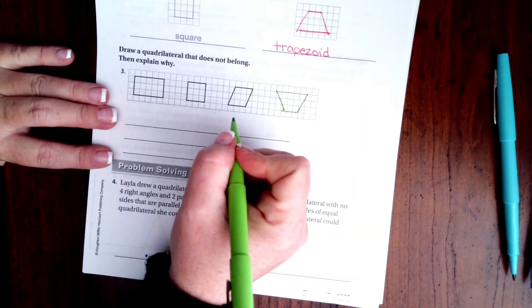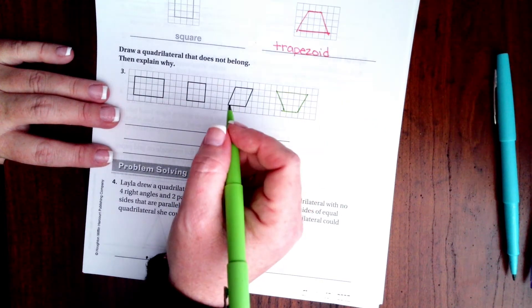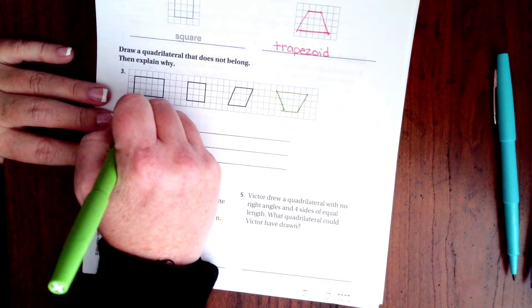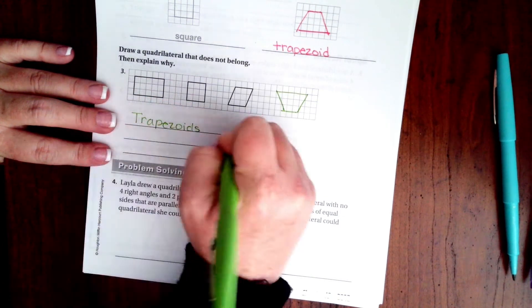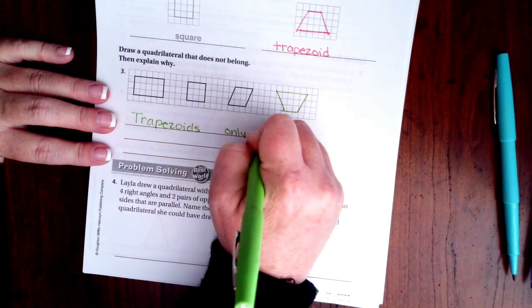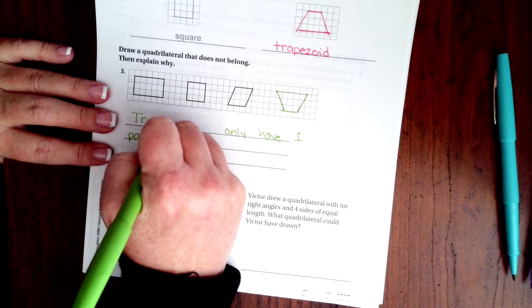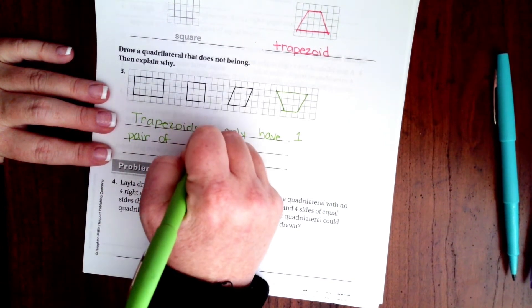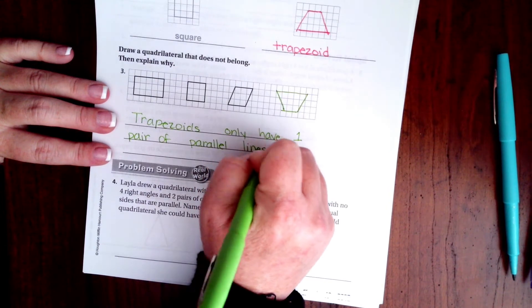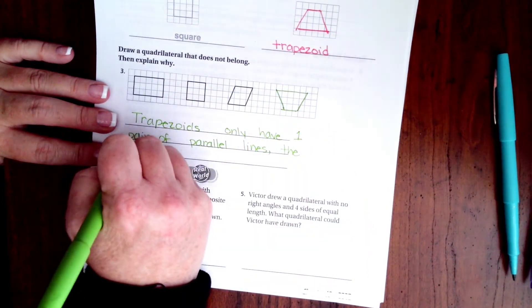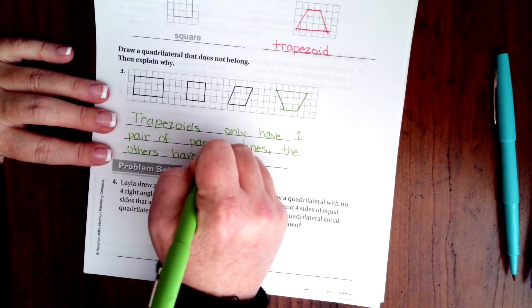So anybody know why it doesn't belong? It doesn't belong because it only has one pair of opposite sides that are parallel. Trapezoids only have one pair of parallel lines. The others have two.